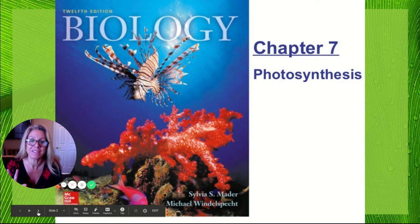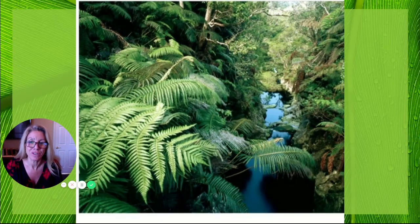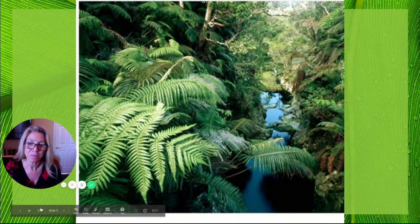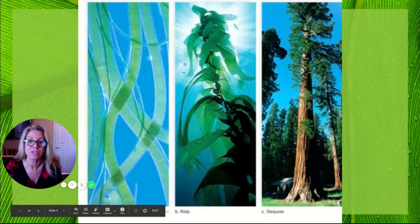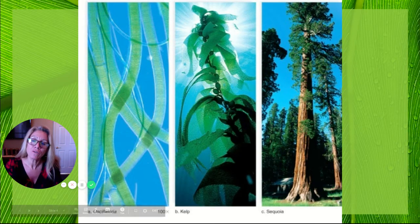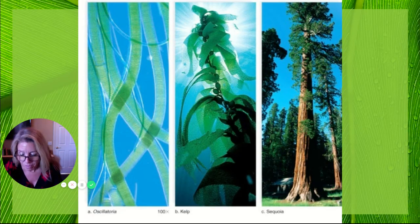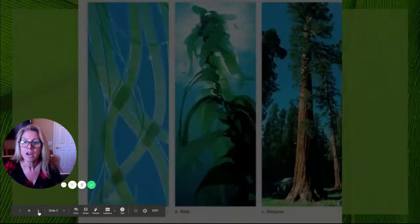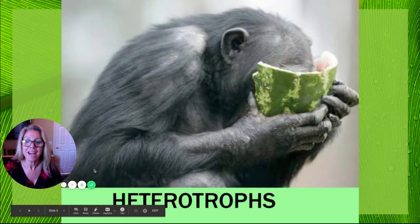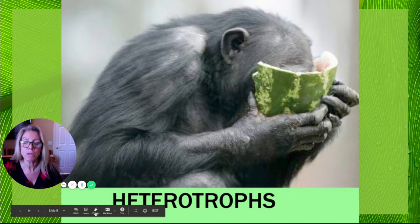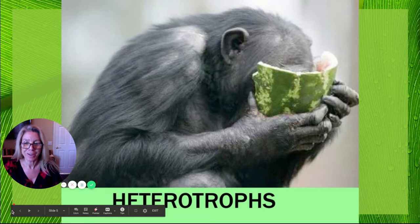Chapter seven on photosynthesis — first things first. These are plants, which we know as autotrophs or producers. Autotrophs or producers can be very small or very large. We are known as heterotrophs because we have to consume preformed organic material.